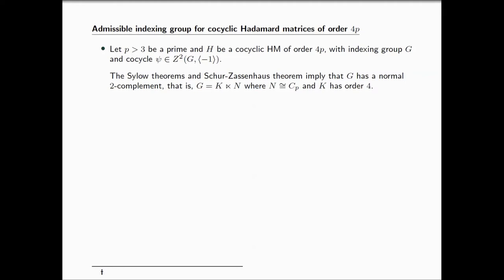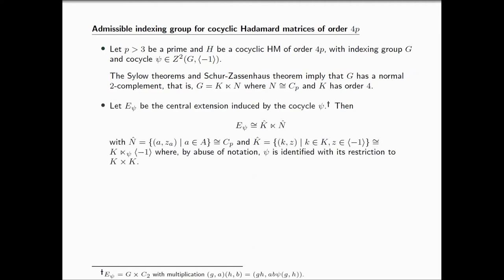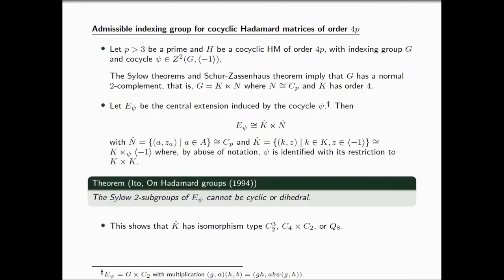With index in group G and co-cycle psi, a combination of Sylow theorems and Schur-Zassenhaus tells us that the group G is indeed a split group and it splits in the following way. Here you've got a normal subgroup that is isomorphic to CP and this fellow here is a Sylow 2 subgroup with order 4. The existence of this group guarantees the existence of this normal subgroup, and so this fellow also splits. Moreover, this fellow again is the Sylow 2 subgroup in the extension. It's isomorphic to the semi-direct product. We're taking the extension of C2 by K induced by the co-cycle psi, but this co-cycle has now been restricted from G cross G into K cross K.